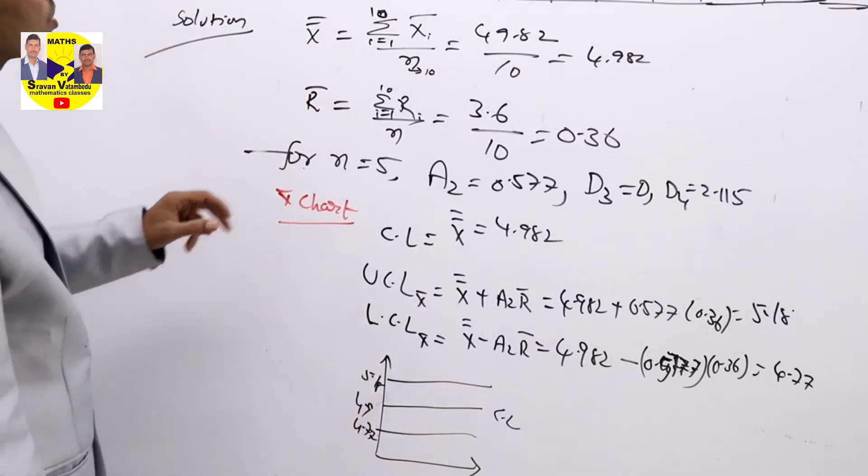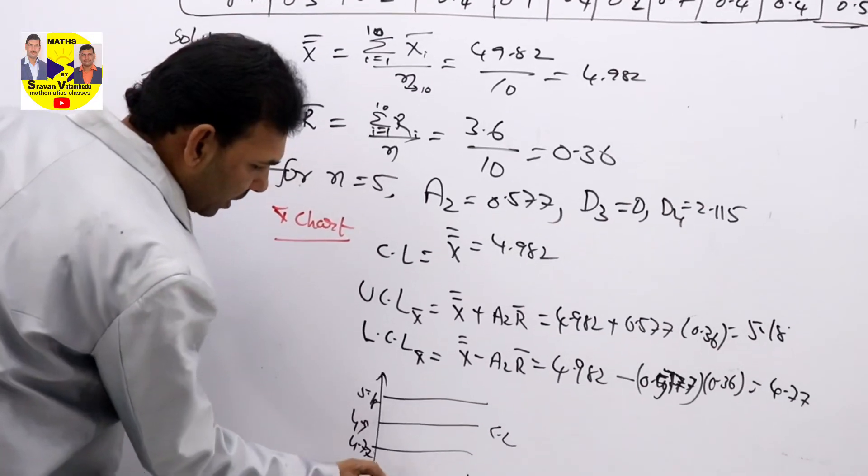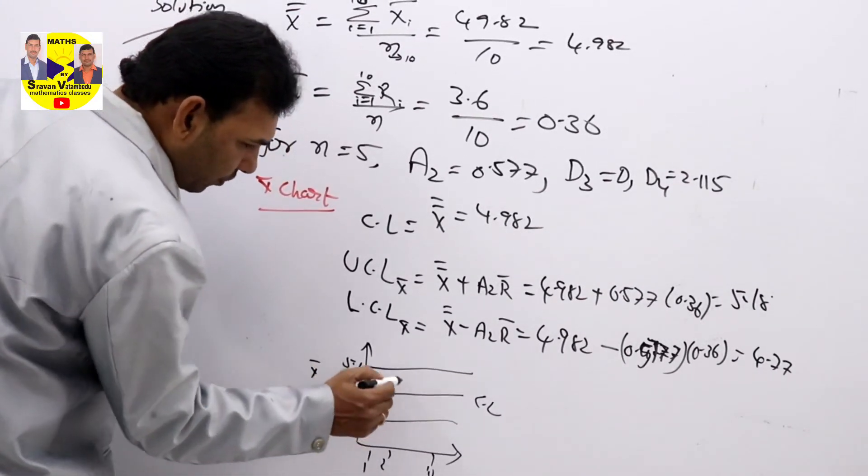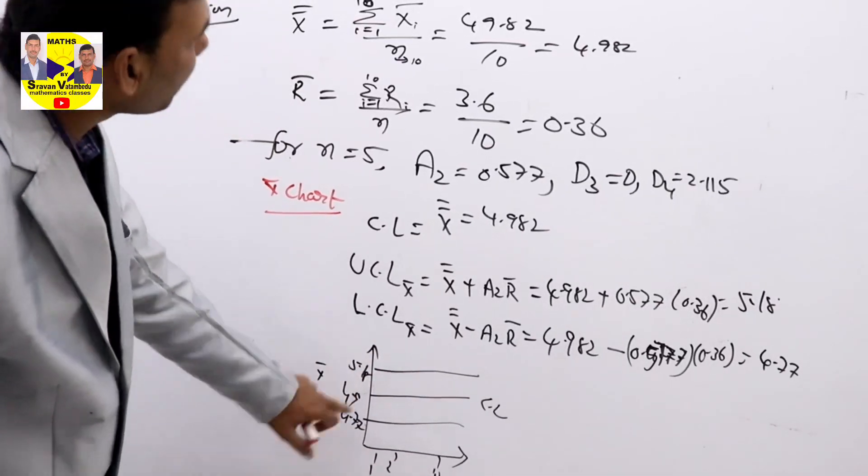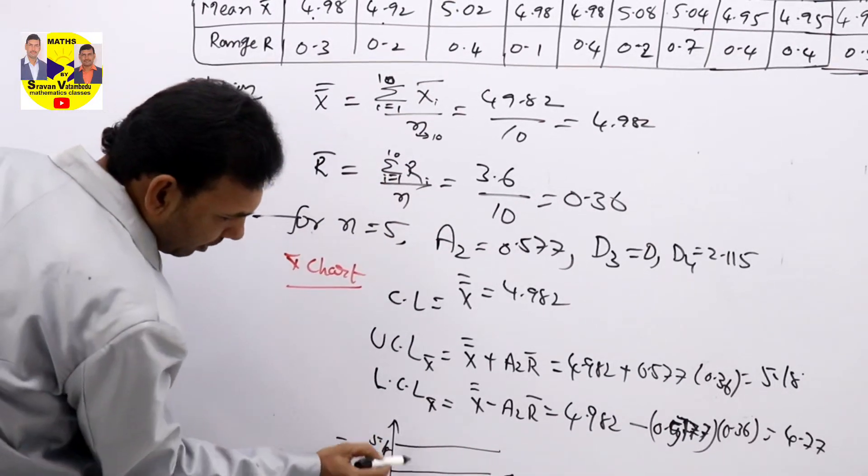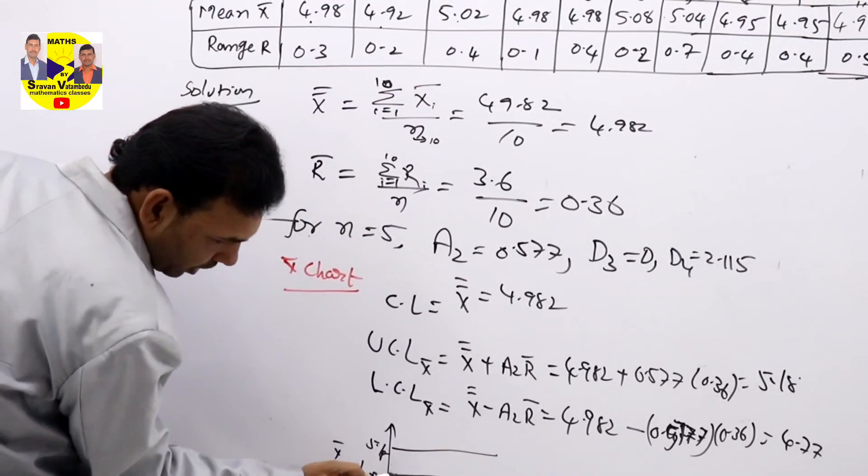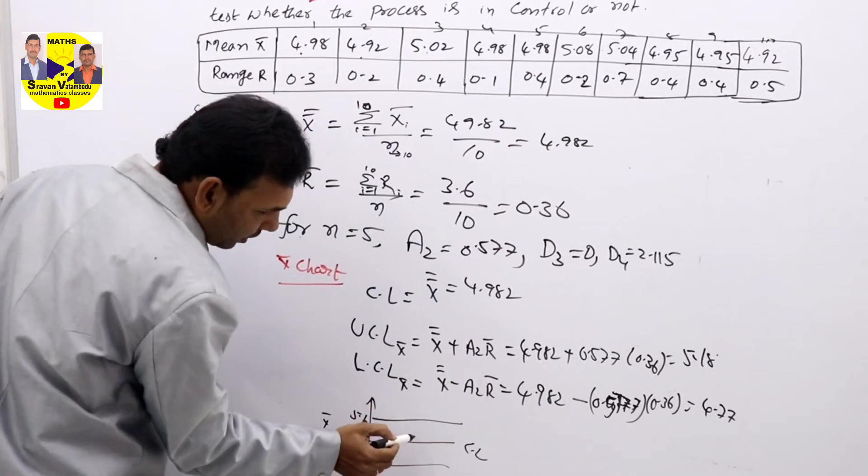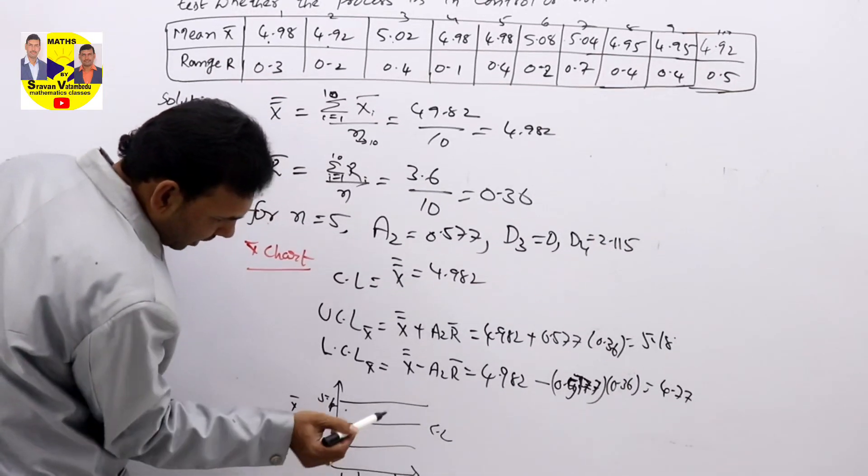If you plot all values, if you see mean values—these are sample numbers 1, 2, up to 10. And here, X bar values if you plot, you will get all values between 5.18 and 4.77. See here, 4.98 will be in between these. 5.02 will be here only, and 5.04 you will get here only. 4.95, that is also here approximately.